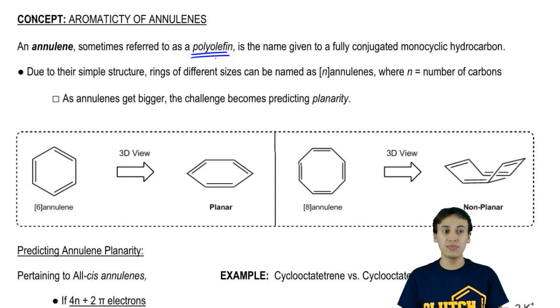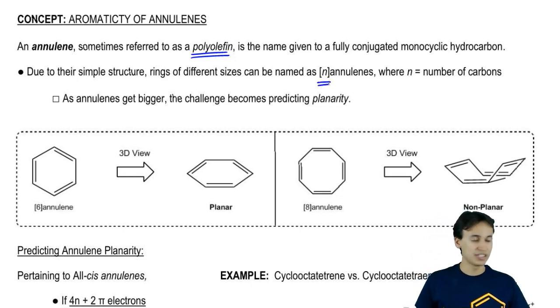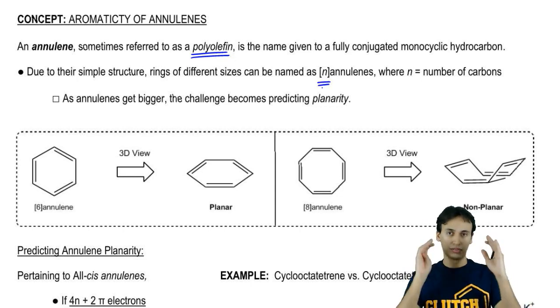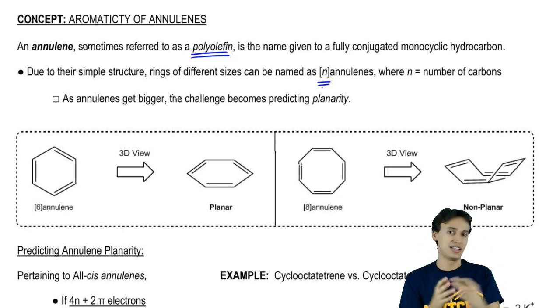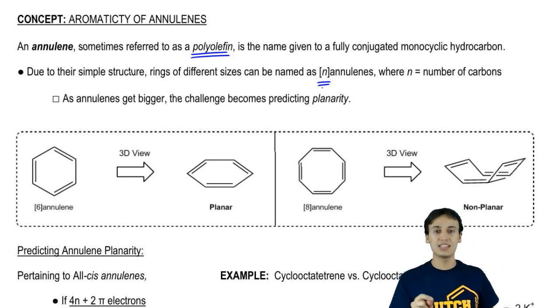Due to their simple structure, where you can always predict it's going to alternate single bond, double bond, the names of these annulenes can be simplified to just the number of carbons in the ring around a bracket, then annulene. Actually, if you think about it, benzene is a type of annulene. Benzene can also be simplified to the name 6-annulene, which is pretty cool.